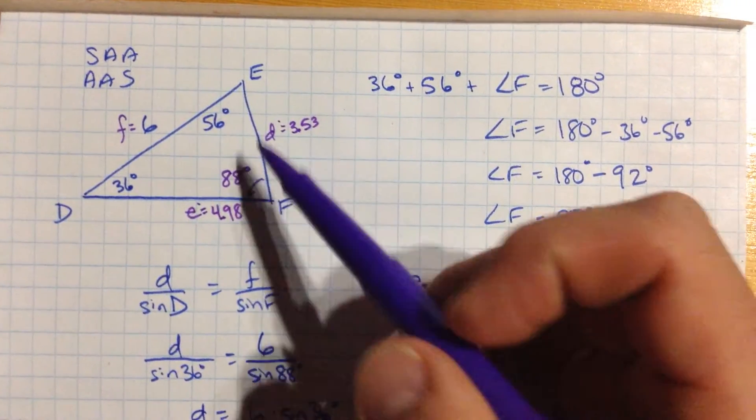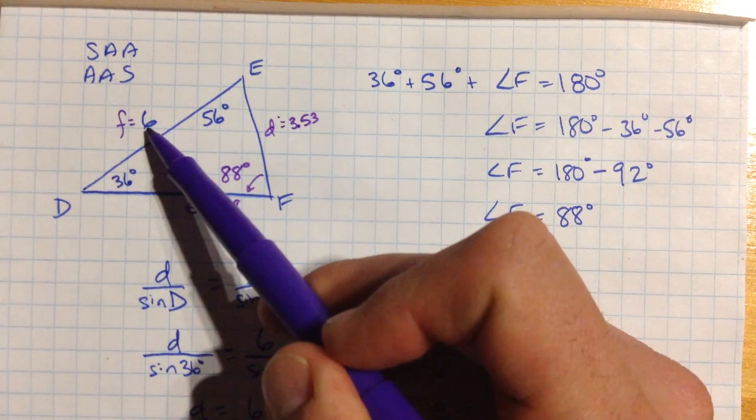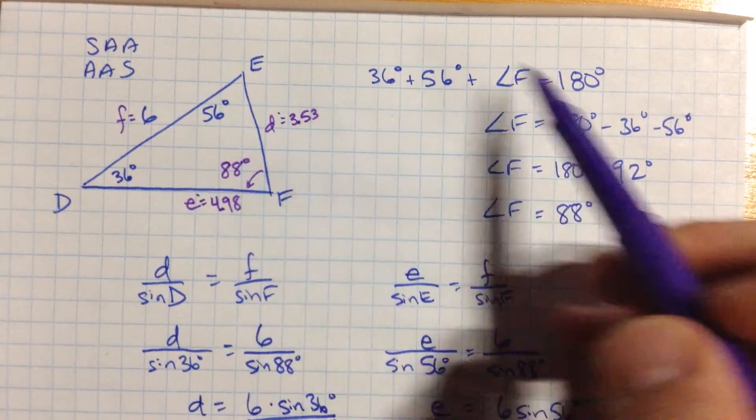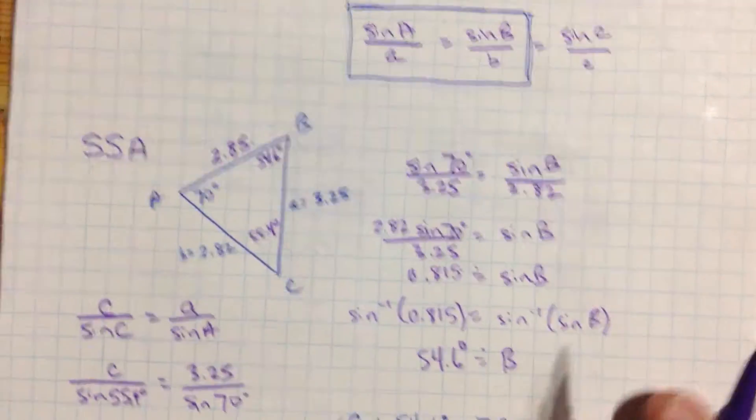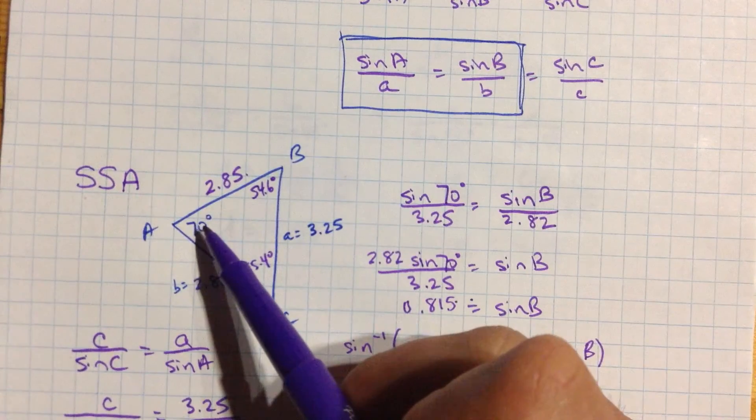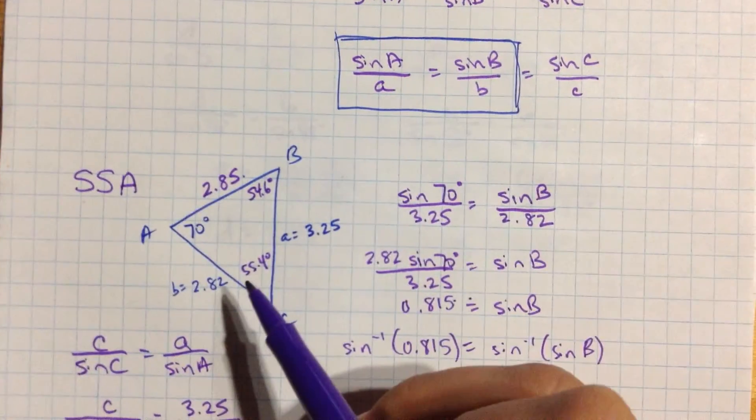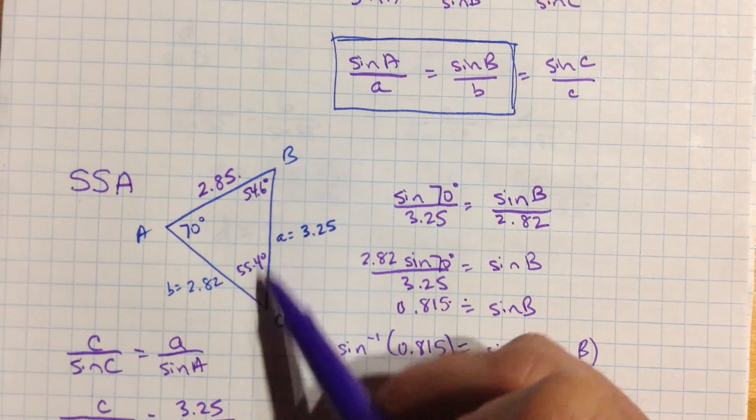You can know any two angles and any side, and that'll be enough, because you can find the remaining side using what you know about triangles. Once again, the other kind is when you have an angle and two sides, and the two sides can't, we often call it contain that angle. The angle can't be the one that those two sides join together to give you.